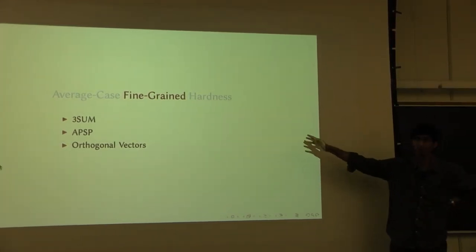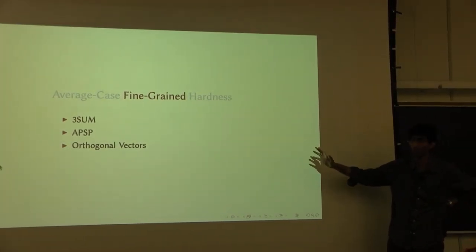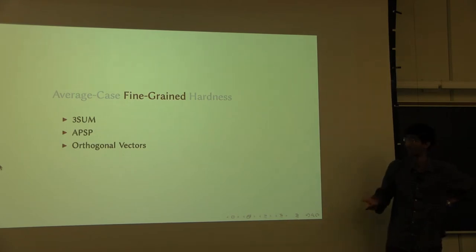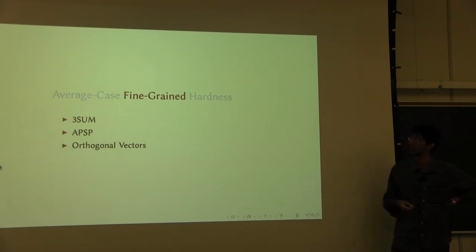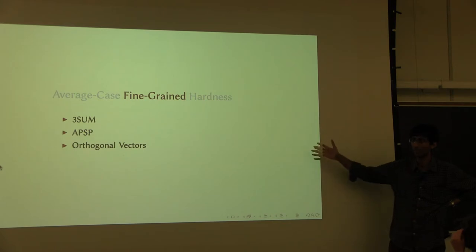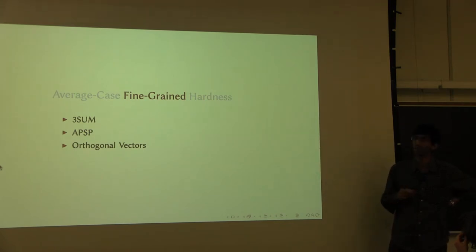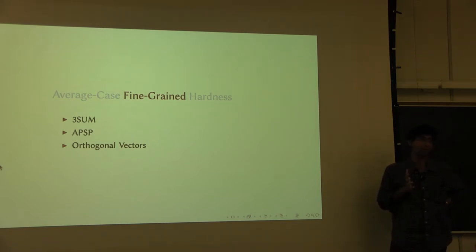In all of these cases, these are all problems in polynomial time — they have polynomial time algorithms. But the question is, what exactly is the polynomial, how efficiently can you really solve them, and what do statements about the complexity of these problems imply for the complexity of other problems? This study has been going on for the past 20 to 30 years, and these are problems that have turned out to be really important because they are connected to lots of other problems.